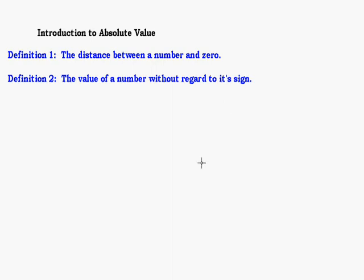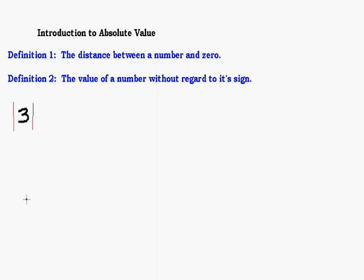I have a couple definitions for you. The first definition is the distance between a number and zero. The symbol for absolute value looks like two vertical bars — two straight up-and-down vertical lines. So if I want to take the absolute value of something I put it between those bars. For example, the absolute value of three — these are not parentheses, not brackets, these are straight vertical lines — and you read it as 'the absolute value of three.'